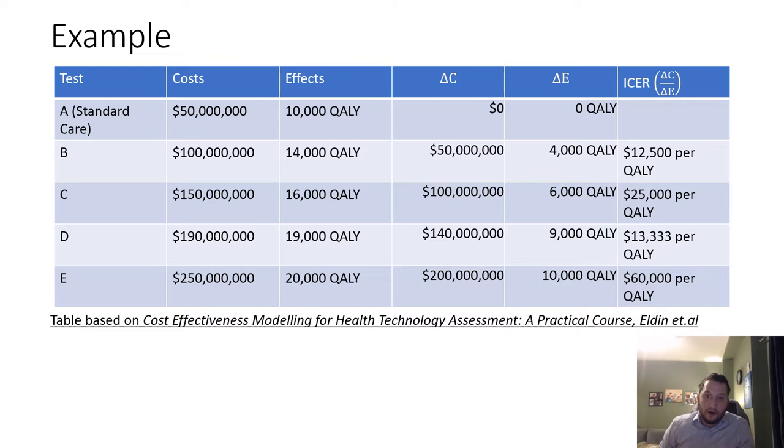An example for thinking about this is from this table here, based on the second chapter of Cost Effectiveness Modeling: A Practical Course by Richard Eldon, Christopher McCabe, Claire Hulham, Peter Hall, and Judy Wright. It's this book—if you're into this stuff, get this.